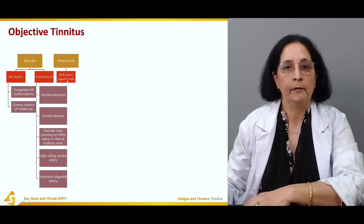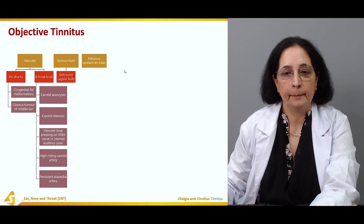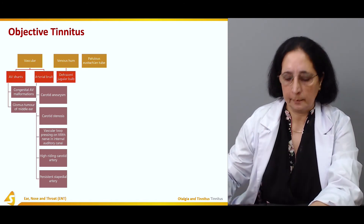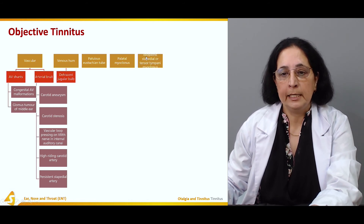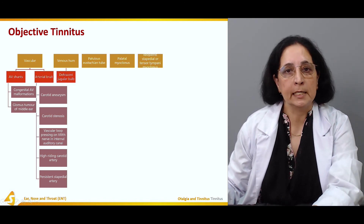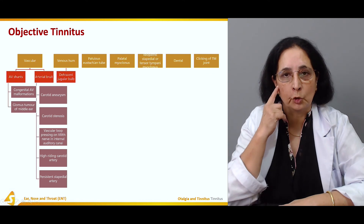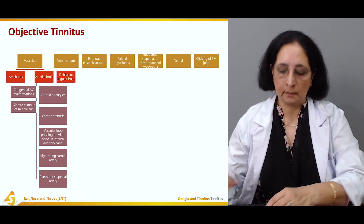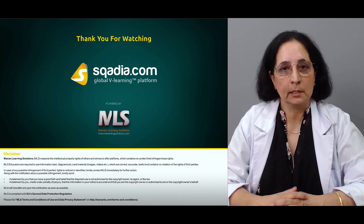A persistent stapedial artery and venous hum — such as when there is dehiscence of the jugular bulb — can also cause objective tinnitus. Patulous Eustachian tube, where the Eustachian tube remains open, palatal myoclonus, and idiopathic stapedial or tensor tympani myoclonus are further causes. Dental causes and clicking of the temporomandibular joint can also produce objective tinnitus, in which the ringing is heard by both the patient and the examiner. That concludes section three.